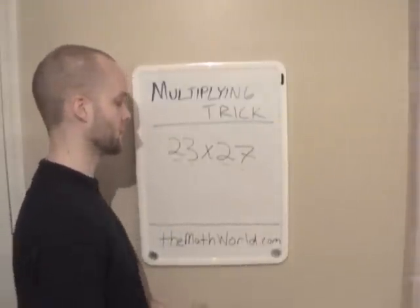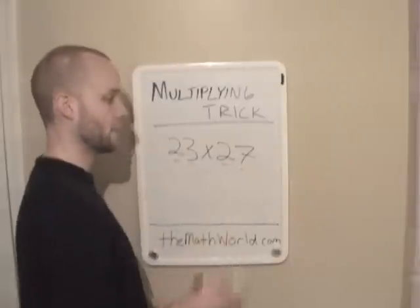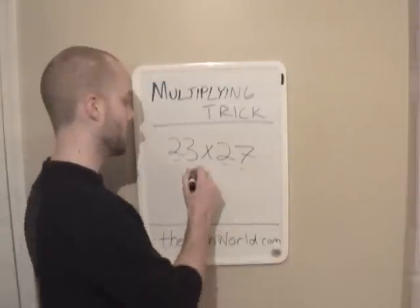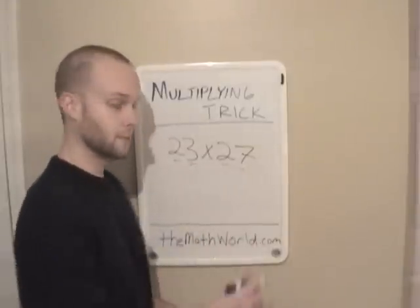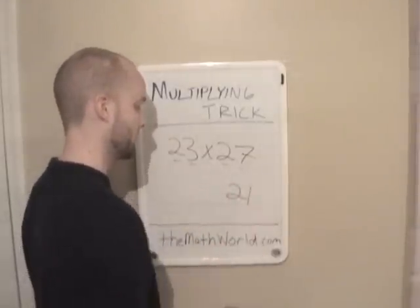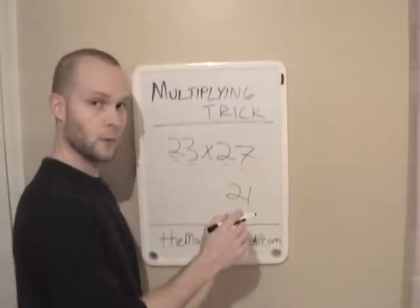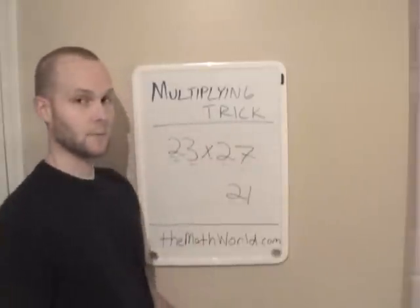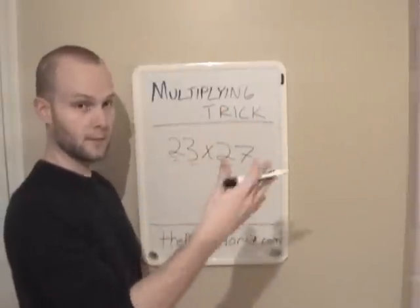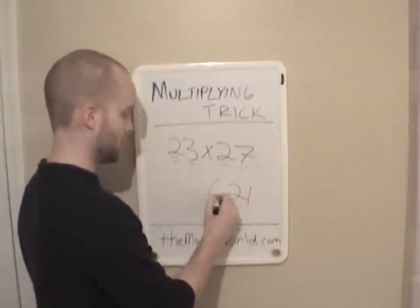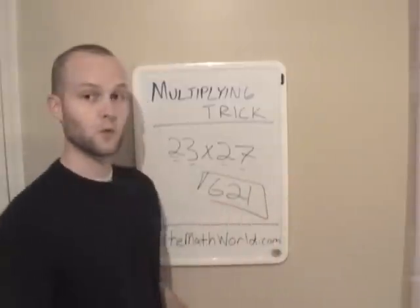We'll look at various examples of how it looks. But anytime you see this, all you have to do is multiply 3 times 7, which is 21. Then you take 2 and multiply by the next highest number — 2 times 3 is 6. So here's your answer: 621.